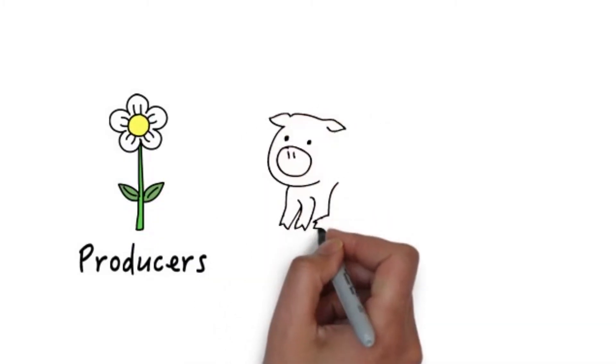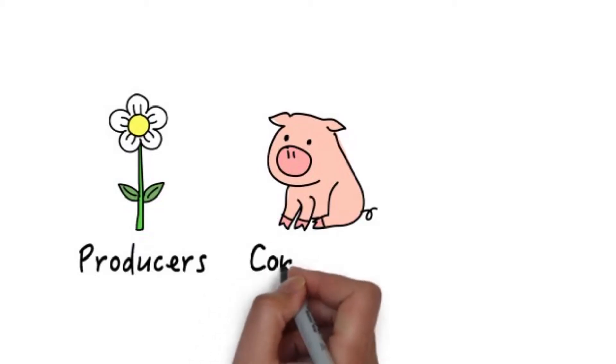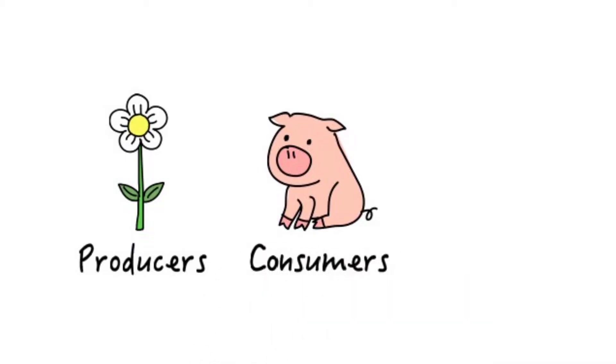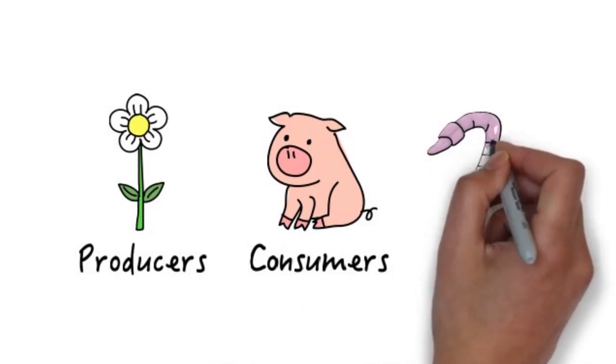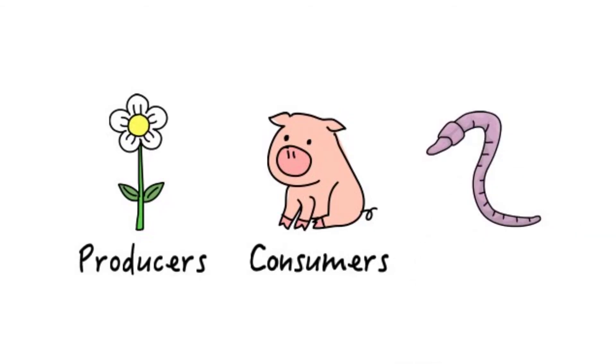Humans or any other living being that must get their food from another living being are called consumers. Living beings such as worms, which are in charge of eating dead things, are called decomposers.